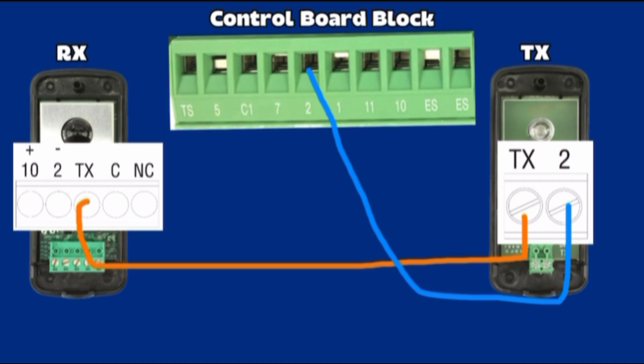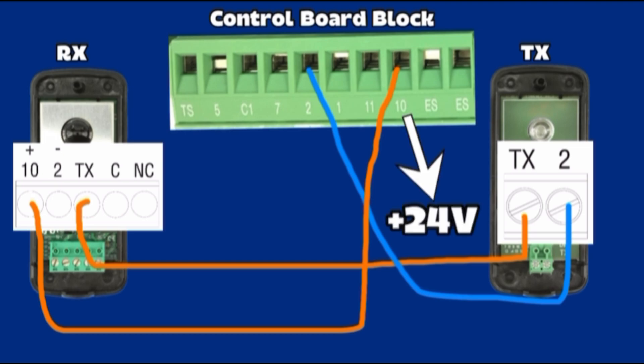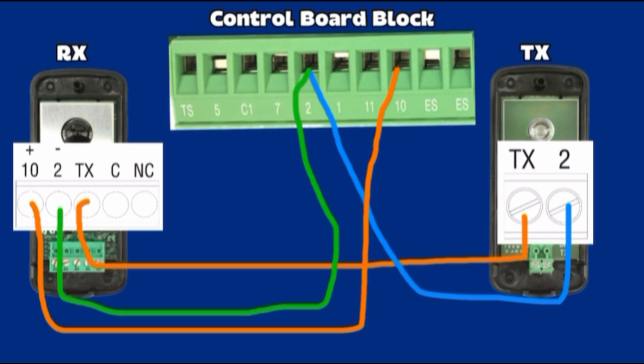Rx receiver photo cell wiring. Terminal 10 on control board connect to terminal 10 on receiver sensor. Terminal 10 is plus 24 volt output on control board. Terminal 2 of receiver sensor connects on control board Terminal 2. The receiver also needs powered at usually plus 24 volt DC from the control board.